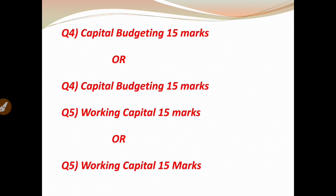Question number 5 will be based on the chapter of working capital — an important chapter. Current assets minus current liabilities — we have to calculate the working capital requirement of the organization. This will also carry 15 marks in the examination, with one alternative question available for working capital. You have to solve any one working capital question.